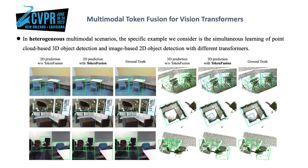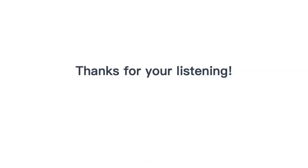In heterogeneous multimodal scenarios, the specific example we consider is the simultaneous learning of point cloud-based 3D object detection and image-based 2D object detection with different transformers. Thanks for your listening. You are welcome to read our paper for more details.